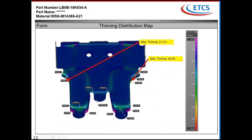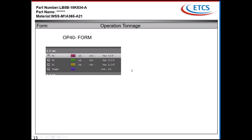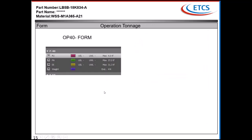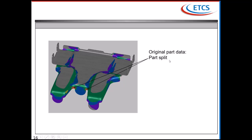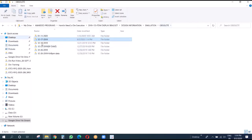When we flange down in those two stages, we have high thinning of 21.1% over there. These two areas were almost close to split. You can see the original part data we had - it originally had a huge split. In the current one we had done some changes, but those were not accepted by the customer. We will show you some more iterations which we did.